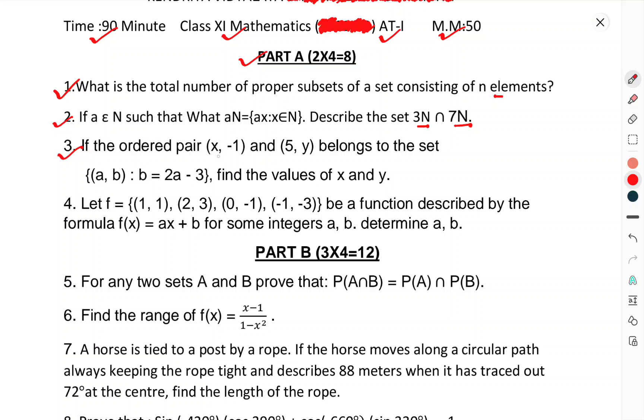Third, if the ordered pair (x, -1) and (5, y) belongs to the set {(a, b): b = 2a - 3}, find the values of x and y.